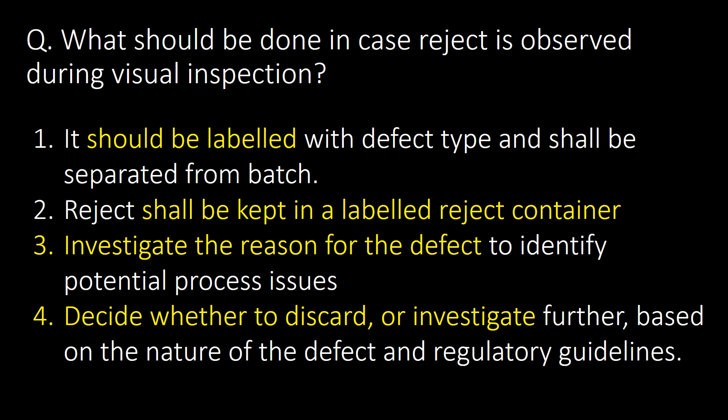What should be done when a reject is observed during visual inspection? First, it should be labelled with the defect type and separated from the batch. Second, the reject shall be kept in a labelled reject container. Third, investigate the reason for the defect to identify potential process issues. Fourth, and very importantly, decide whether to discard or investigate further based on the nature of the defect and regulatory guidelines.